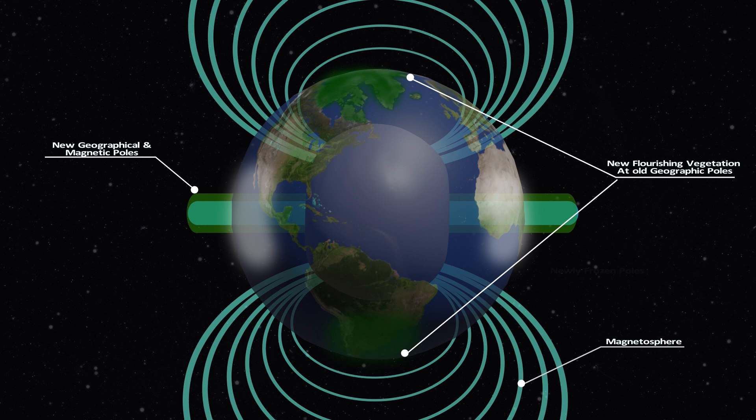the opening of the toroidal sphere at the exposed polar areas would relocate to a new region on the planet. This would create new magnetic and geographic pole regions aligned together.